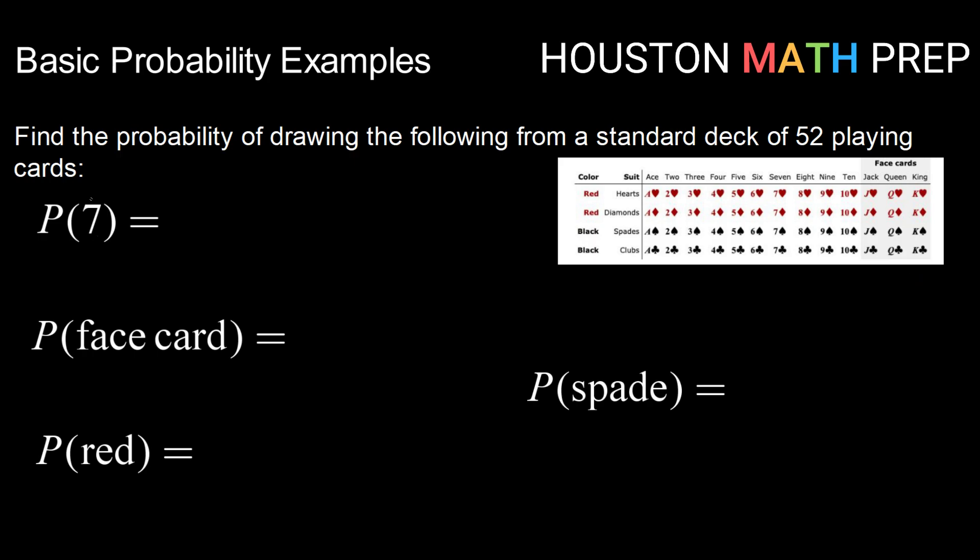So here in our first probability, what is the probability of drawing a 7? We know probability would be the number of 7s in the deck divided by the total number of cards in the deck. There are 52 cards in the deck. And if we look, there are 1, 2, 3, 4 sevens. So 4 out of 52, or 1 out of 13, is our probability of drawing a 7.